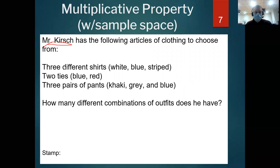Mr. Kirsch has the following articles of clothing to choose from: three different shirts — a white, a blue, and a striped one — two ties, a blue and a red one, and three pairs of pants — khaki, gray, and blue. How many different combinations of outfits do I have? One outfit would be a white shirt, blue tie, khaki pants; or a white shirt, red tie, khaki pants; or a white shirt, blue tie, gray pants — lots of combinations just by changing ties and pants, not even the shirts.